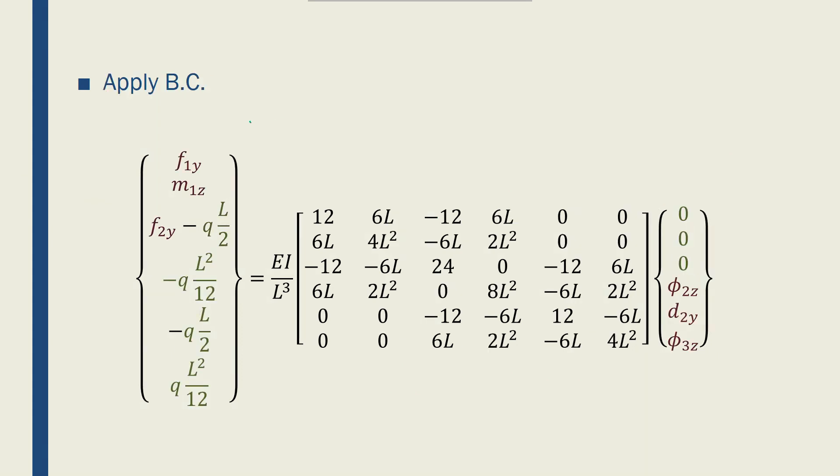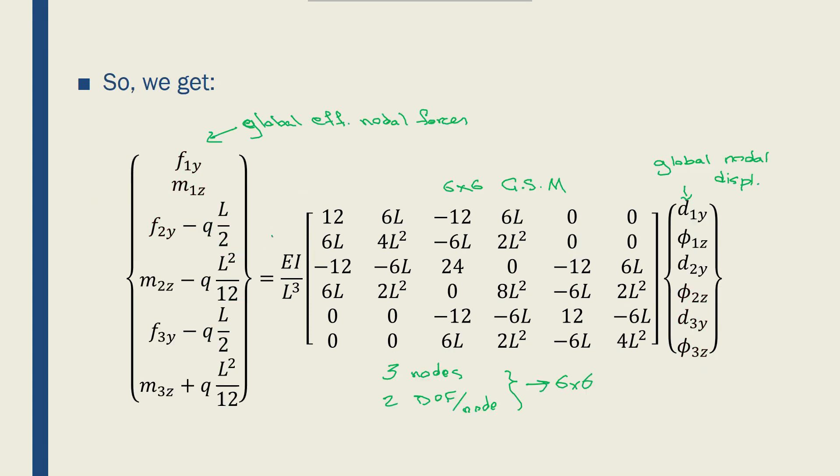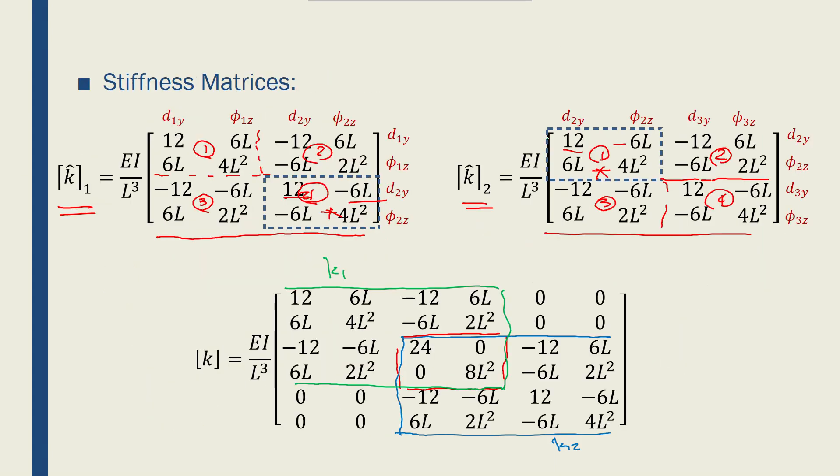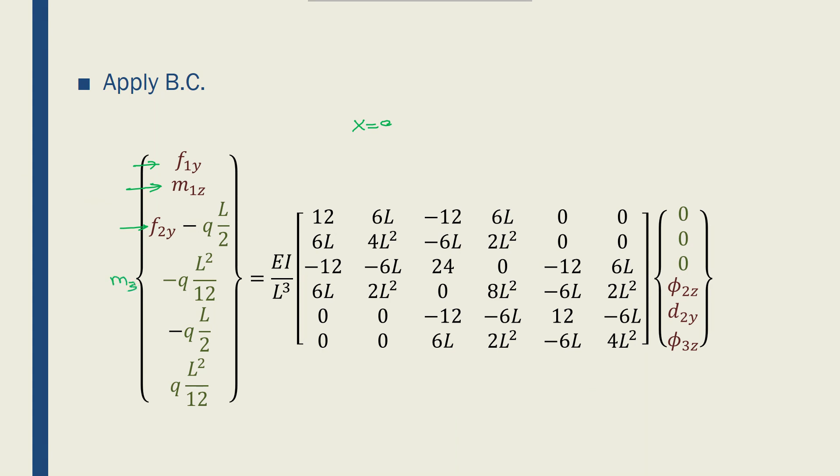Now, if I apply the boundary conditions, I know that there is an F1y and M1z reaction force at the first end, and I also have F2y. But here I have nothing. So F3y equals 0, M3z equals 0, and M2z equals 0. That's why M3z here is 0, and F3y and M3z are 0 here.